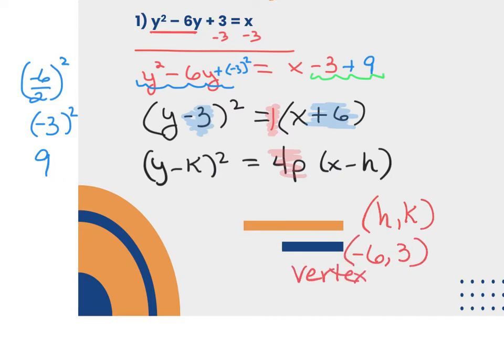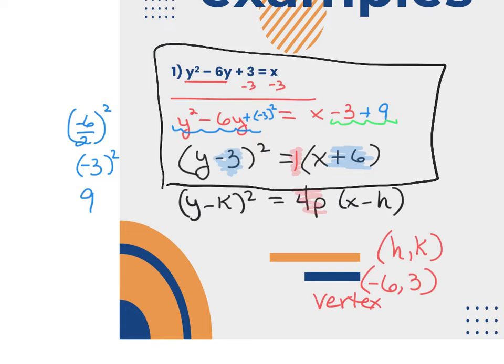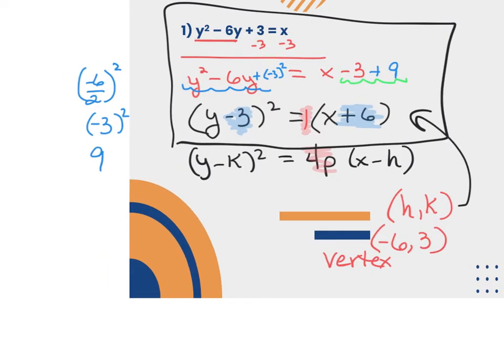The only new part of this lesson was completing the square to reach standard form — everything from here is what you did on the Friday quiz. The p-value is the number in front of the non-squared parentheses. So 4p equals 1, divide by 4, and the p-value is 1/4. Remember, the p-value is the distance from the vertex to the focus, and also from the vertex to the directrix.